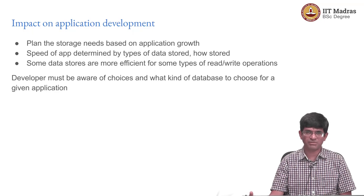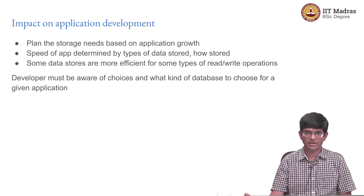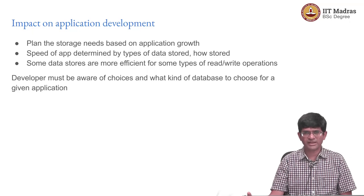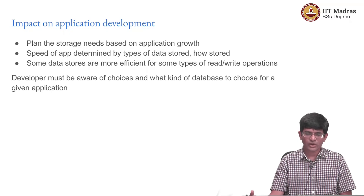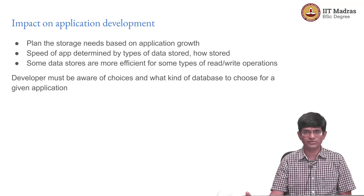But if you decide to put everything in main memory, either your server becomes ridiculously expensive or you need a large number of servers — and in both cases, what happens if a server crashes? You lose data because it is volatile memory. At the same time, some data stores are more efficient for certain kinds of operations. You might have an application like log file analysis where you are writing a lot of data but not necessarily reading it very often. Some kinds of storage may be more efficient at storing information like that, while others may be efficient at reading large amounts of data. So as a developer, you need to be aware of your choices and what kind of database to choose for a given application.